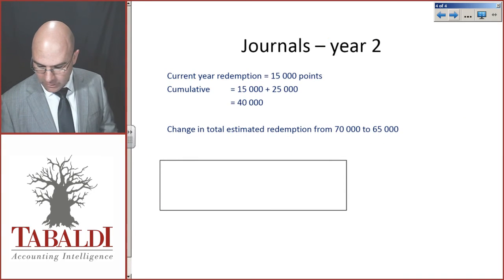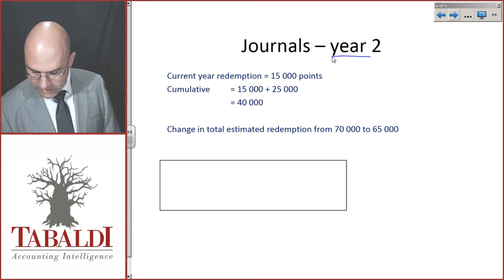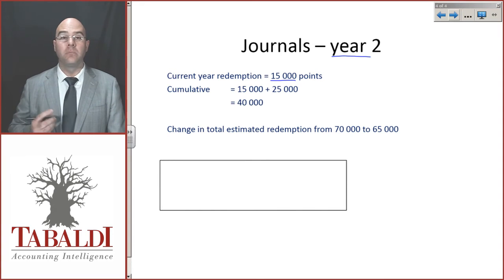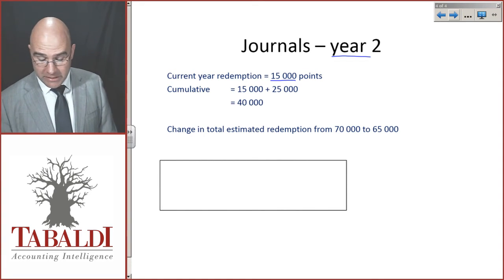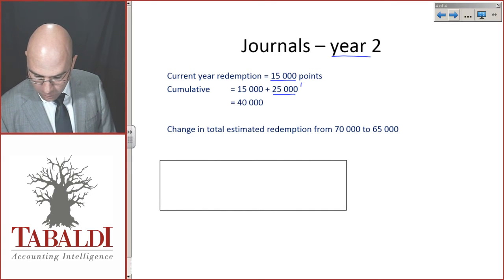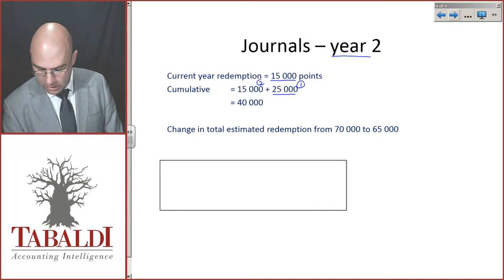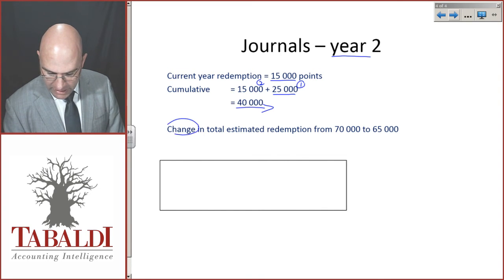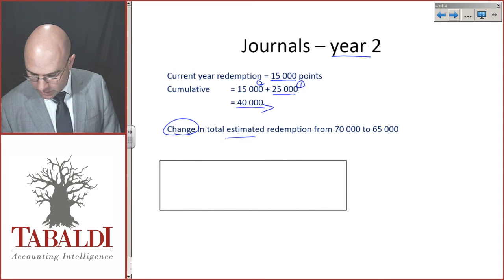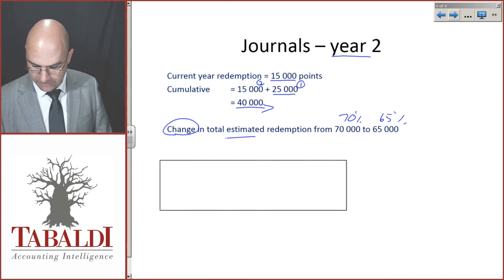Next up, let's have a look at year 2. The current year redemption, we have another 15,000 points being redeemed. The cumulative up to this date now are 25,000 from year 1, 15,000 from year 2—a total cumulative points redeemed of 40,000. We also had a change in total estimated redemption from 70% to 65%.